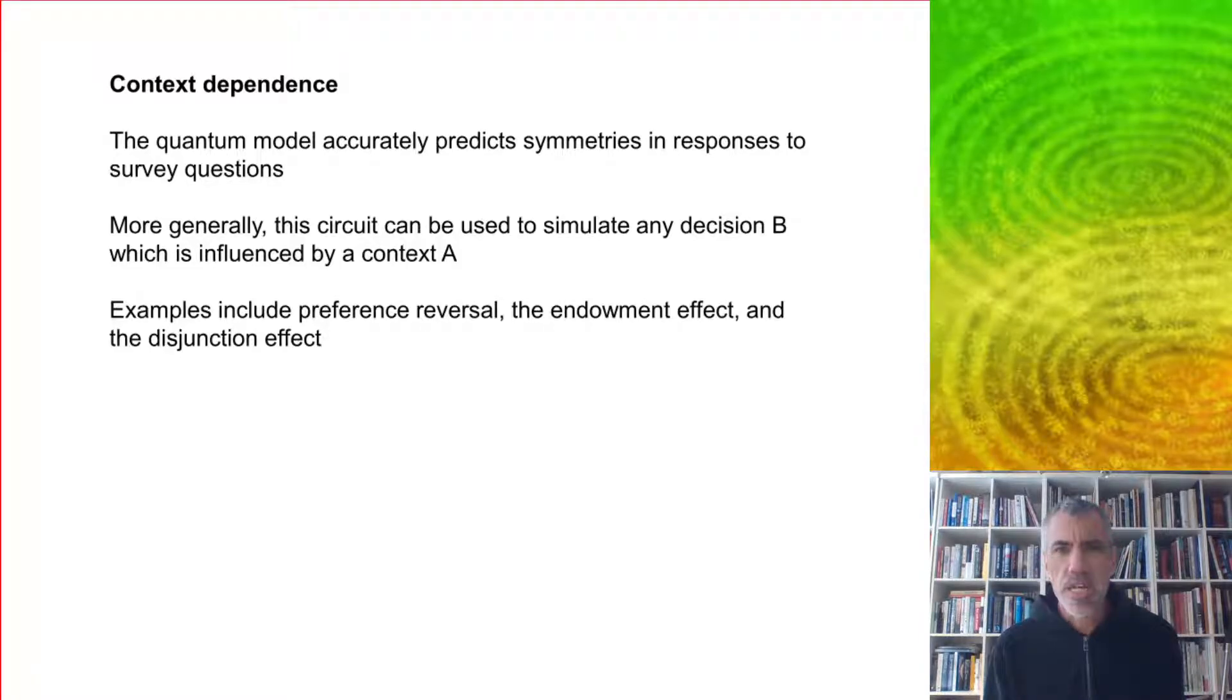More generally, this same circuit can be used to simulate any decision B which is influenced by context A. Some examples include preference reversal, where we change our mind depending on the context, the endowment effect, where we value something more if we own it, and the disjunction effect.